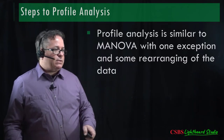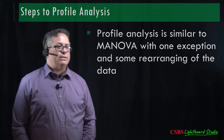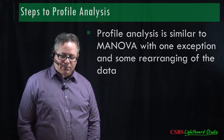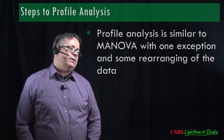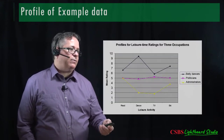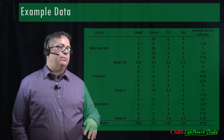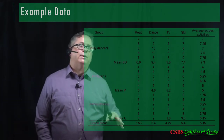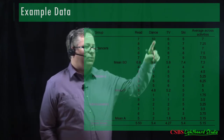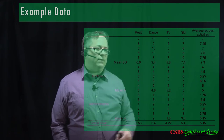Profile analysis is not just similar to MANOVA — it's essentially the exact same thing, just with a rearrangement of the data into segments. Segments are differences between adjacent points: read minus dance, dance minus TV, TV minus ski. So we convert all four DVs into three segments.